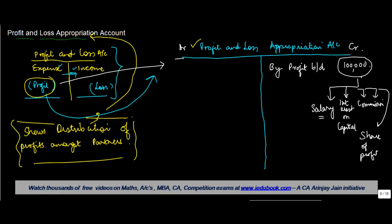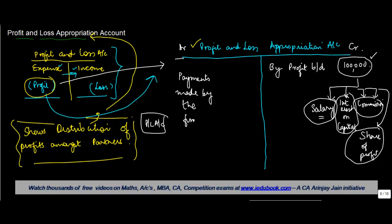From the perspective of the firm, this distribution of money is kind of an expense. Just like all other expenses in your profit and loss account, these payments made by the firm are reflected on the debit side of the profit and loss appropriation account - payments made by the firm to the partners and not an outsider.